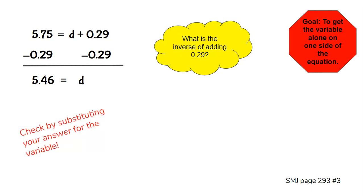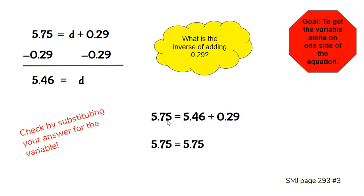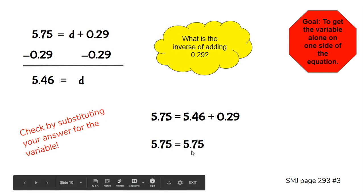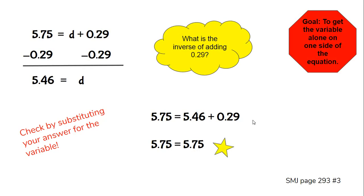We need to check by substituting our answer for the variable: 5 and 75 hundredths = 5 and 46 hundredths + 29 hundredths. When we add them together, we get 5 and 75 hundredths. It works — awesome!